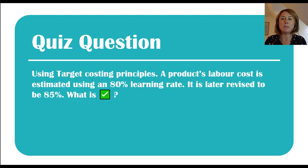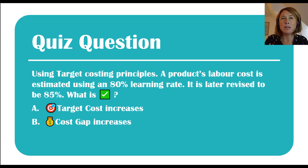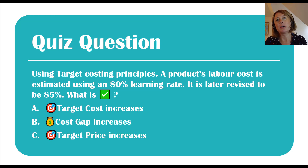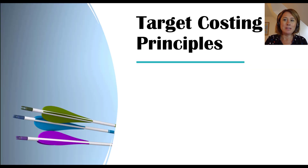Here's the quiz question: using target costing principles, a product's labor cost is estimated using an 80% learning rate. It is later revised to be 85%. What's the correct answer? A: the target cost increases. B: the cost gap increases. C: the target price increases. In order to answer this question you need to know two concepts — target costing and learning curves — and this question combines the two.